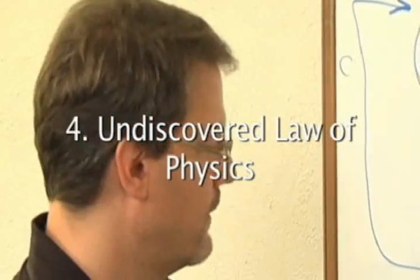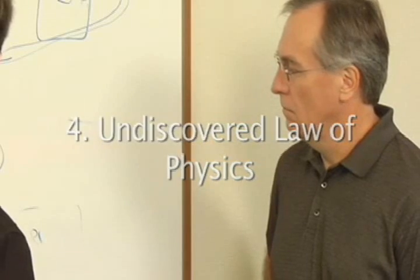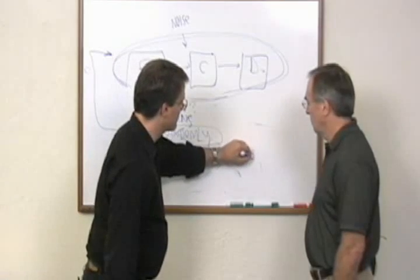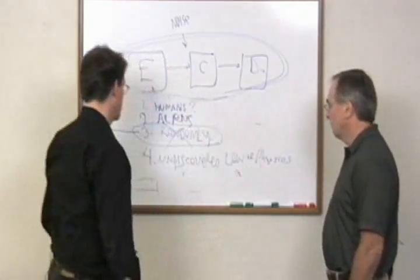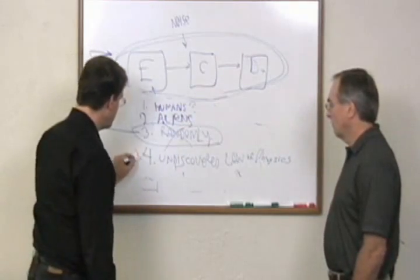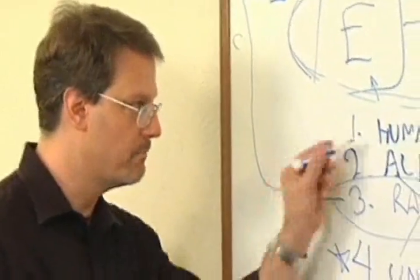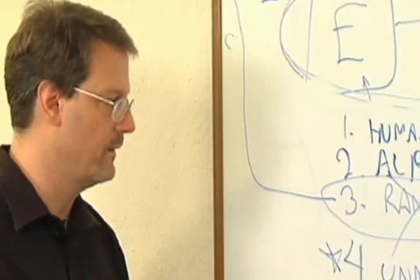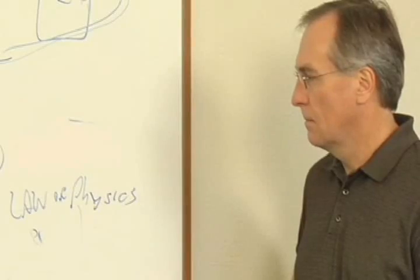Number four: the genetic code is the result of an undiscovered law of physics. Now, this is an honorable answer. It's better than the previous ones. It's a lot better than the random explanation. This is worth looking at.